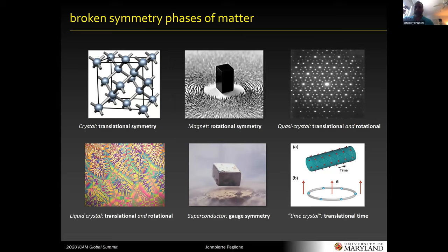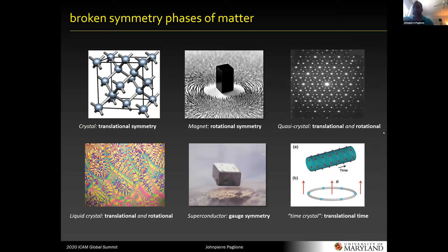We all know broken phases of matter as different types of symmetries that are broken — for instance, crystal symmetries, rotational symmetries, superconductors and so on. Almost every phase of matter you can think of breaks some kind of symmetry, and that's how we think about it. Superconductivity is one of the most famous ones. It has a subtle symmetry breaking, but nevertheless, it's a phase of matter, a phase transition. And this has kept us busy for 100 plus years.